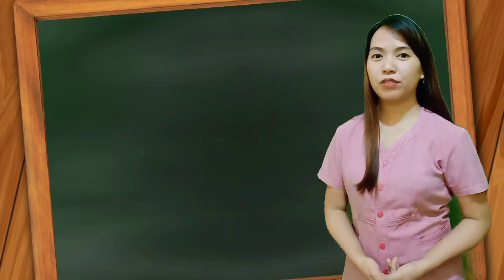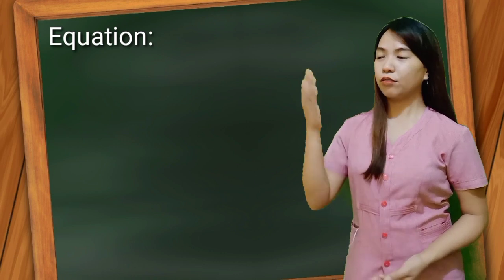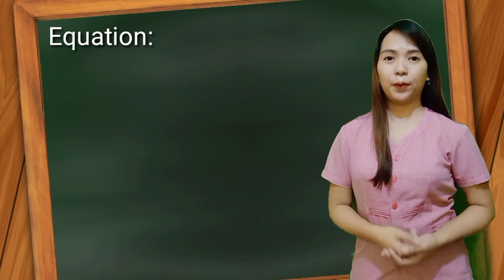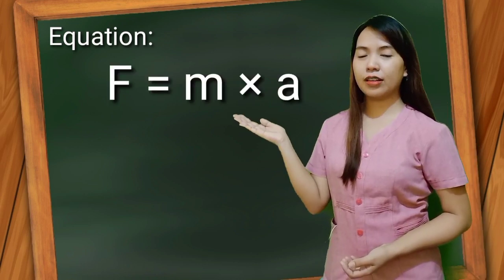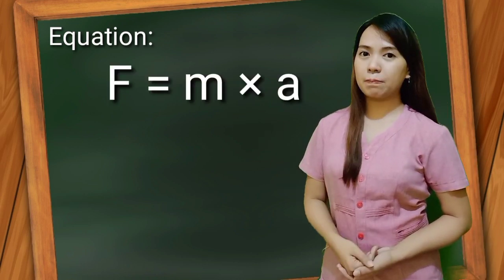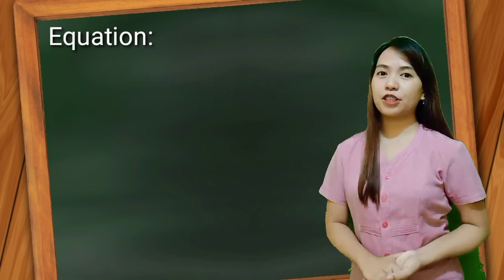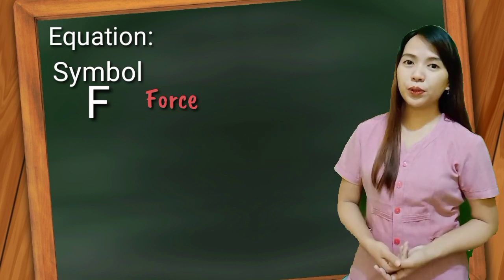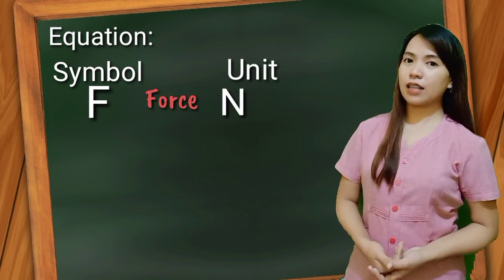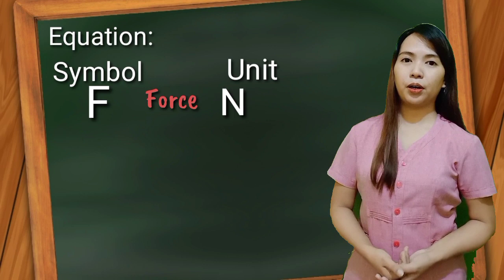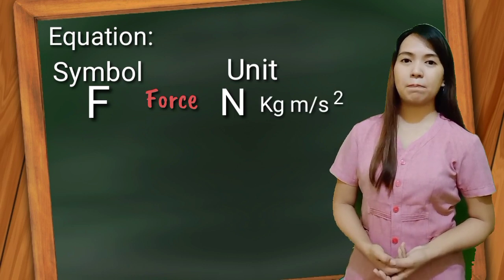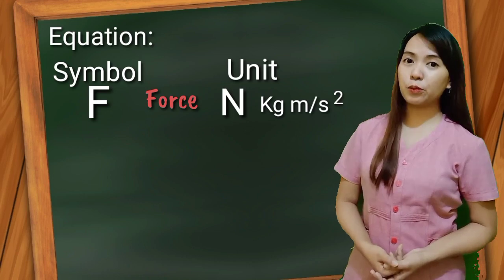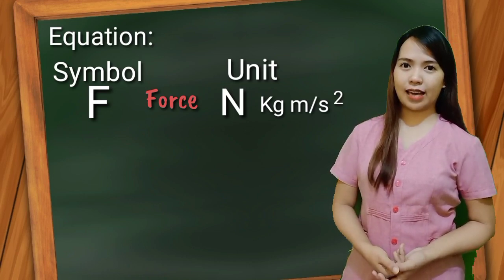This is the equation for acceleration: Force equals mass times acceleration, or F = M × A. Capital letter F is the symbol for force. Newton is the standard unit for force, or kilogram meter per second squared, or we can read that as kilogram meter per second per second.